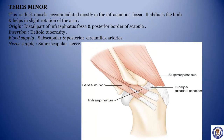Teres minor: this is a thick muscle accommodated mostly in the infraspinous fossa. It abducts the limb and helps in slight rotation of the arm. Origin: distal part of infraspinous fossa and posterior border of scapula. Insertion: deltoid tuberosity. Blood supply: subscapular and posterior circumflex arteries. Nerve supply: suprascapular nerve.